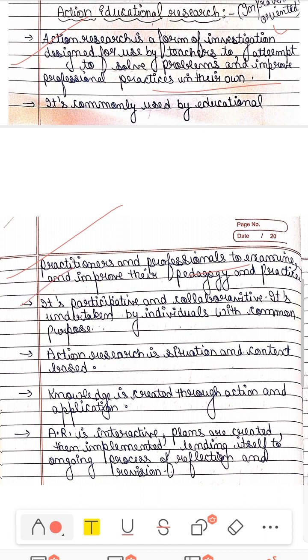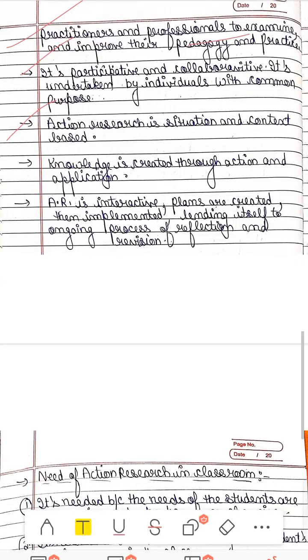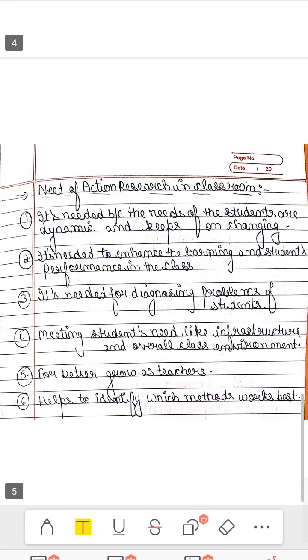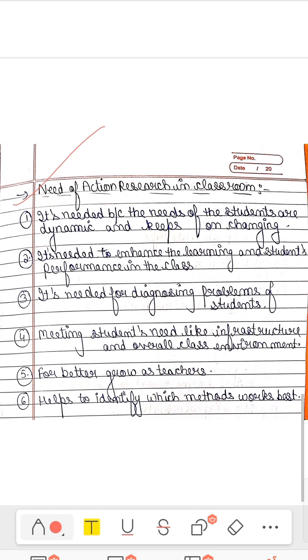This is participative and collaborative. Action research is situation based. It depends on the situation and how you can solve the problem. How you have to use your pedagogy. Knowledge is created through action and application. Action research is interactive and you can make plans like lesson plans and then reflect and then revision.